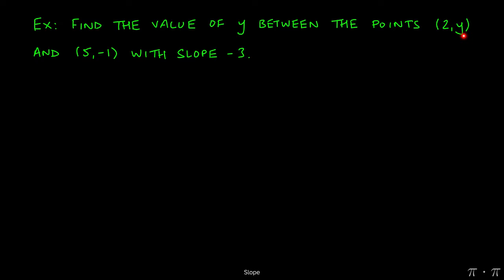So essentially, what value of y here would give us a slope of -3 if the line were to pass through these two points (2, y) and (5, -1)?